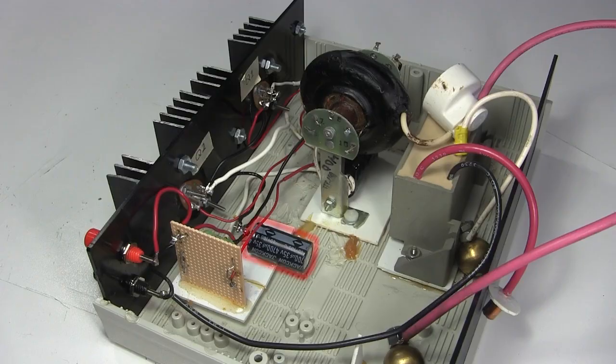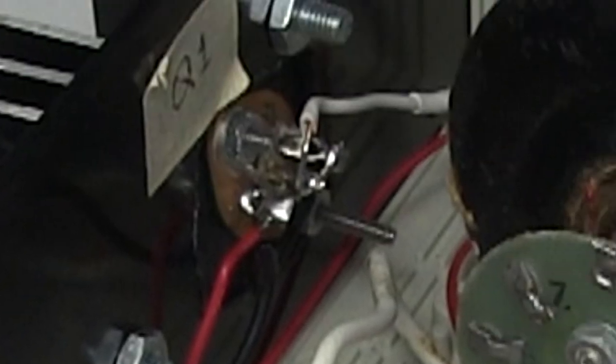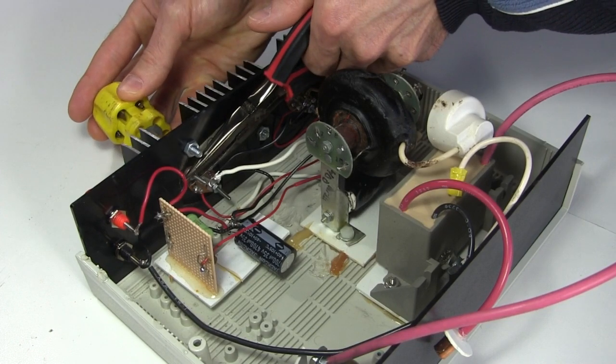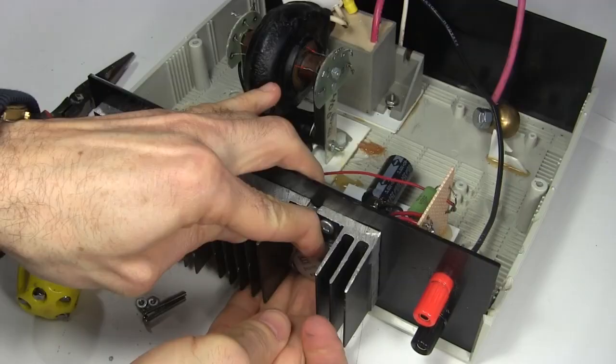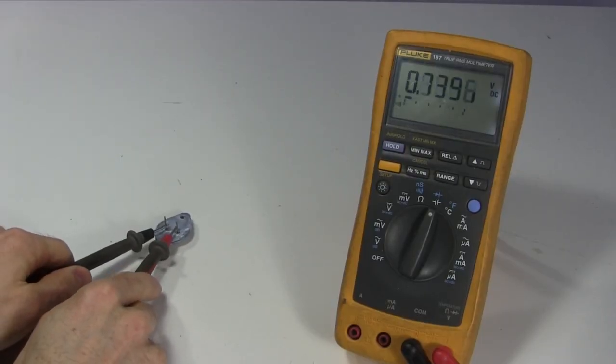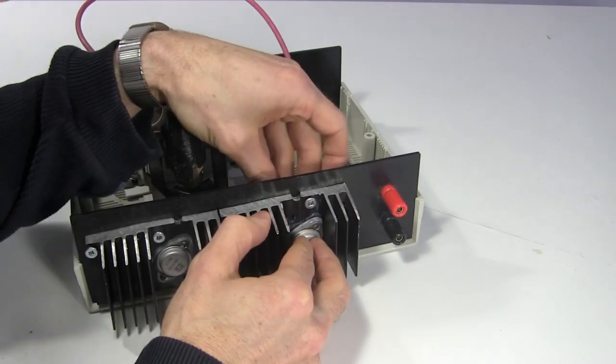Next I think about testing this capacitor. But then I remember that the transistors are simply bolted into their sockets, and unbolting them is easier than desoldering the capacitor. So I unbolt the first transistor and test it. It's fine. So I put it back.